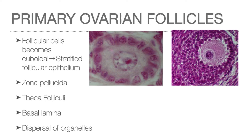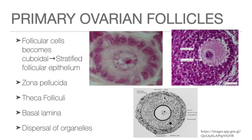The next follicle is the primary follicle. In this follicle, the growing oocyte is surrounded by one or more layers of cuboidal cells, now called granulosa cells. Glycoprotein secreted by the oocyte is deposited into the space between the oocyte and the innermost granulosa cells, condensing to form a highly refractile area called the zona pellucida. Connective tissue surrounding the follicle becomes organized to form the theca folliculi. Basal lamina separates the granulosa cells from the theca cells. The organelles, previously clumped adjacent to the nucleus, are now dispersed throughout the entire cytoplasm.